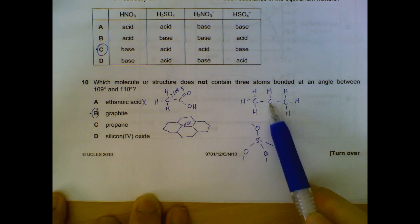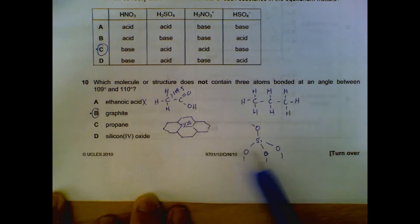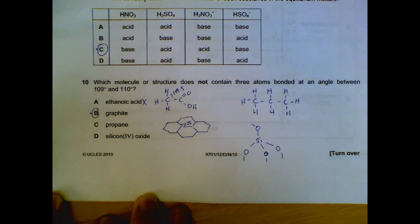Propane, if you were to check, it's tetrahedral so it's 109.5. Silicon dioxide is tetrahedral giant covalent. So B is the answer.